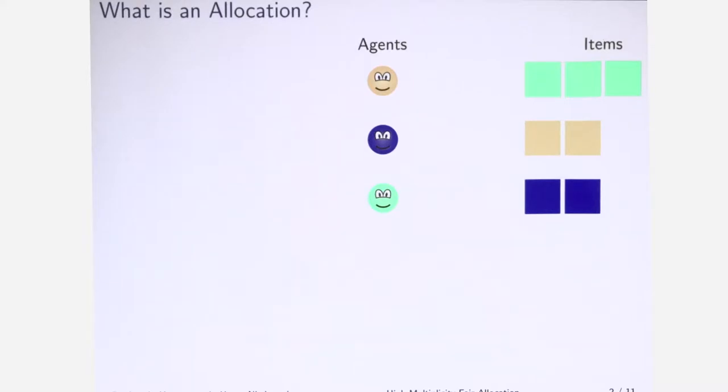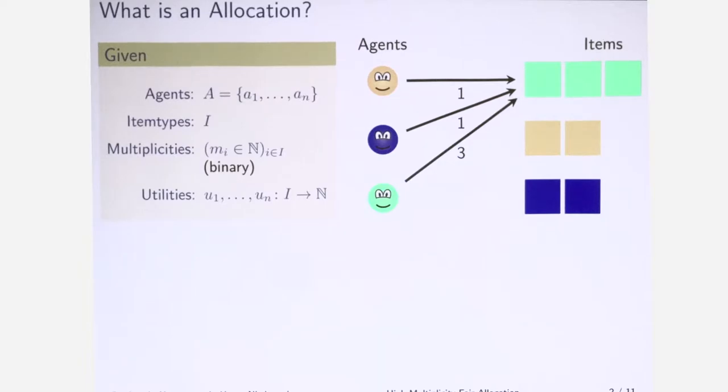Now what we need to know is some kind of utility that the agents give to the items. Here we can see this yellow guy gives utility one to the green item, whereas this green guy gives utility three. Just for being formally correct, this is what we are given. The multiplicity of items are given in binary, which is also why it's high multiplicity. Here I use this key that each agent values a particular item to one if it's not of the same color, and to three if this is the other case.